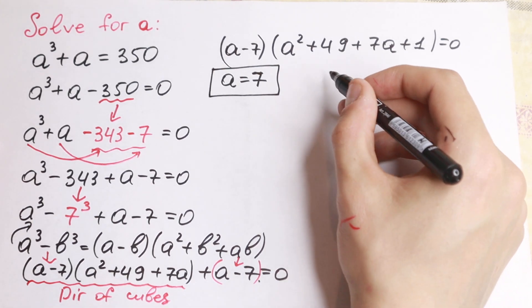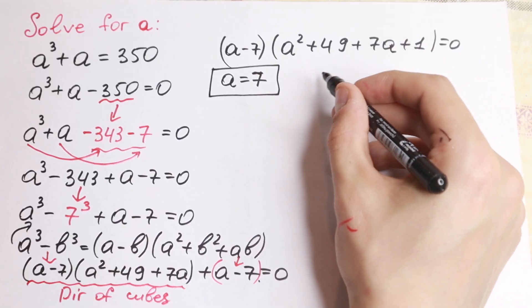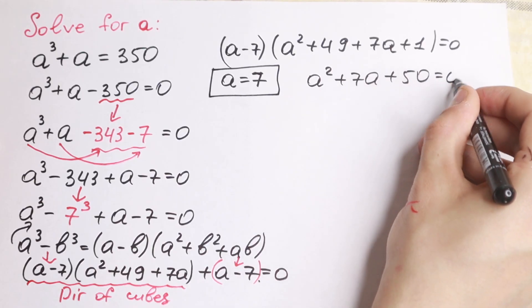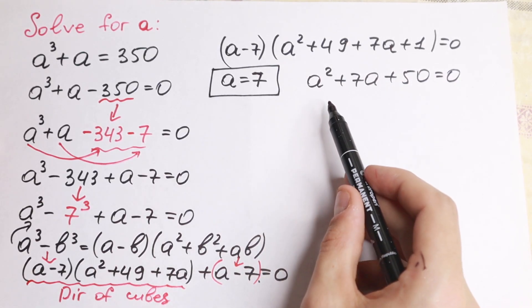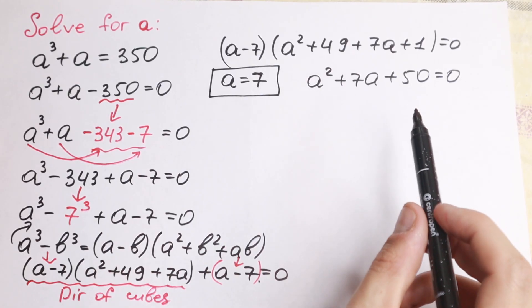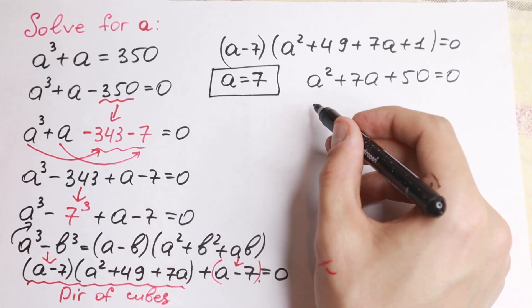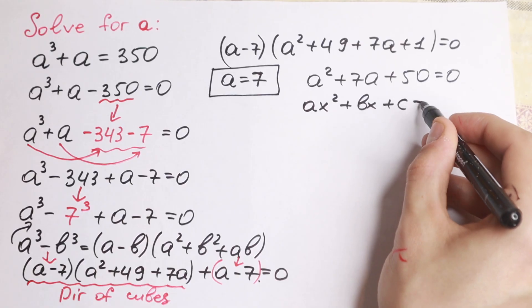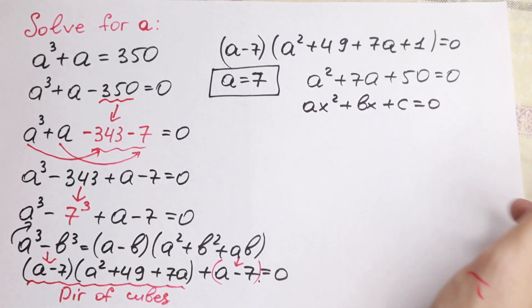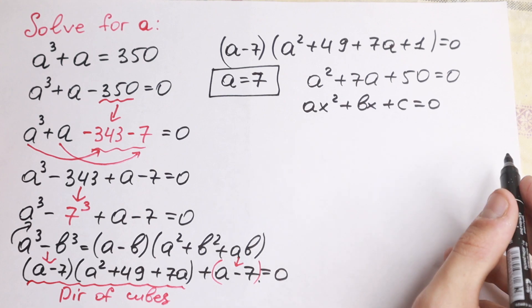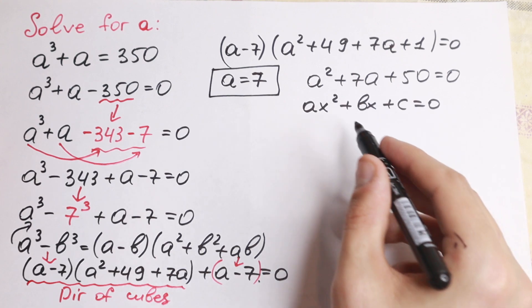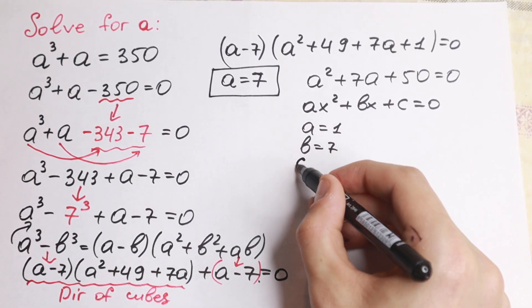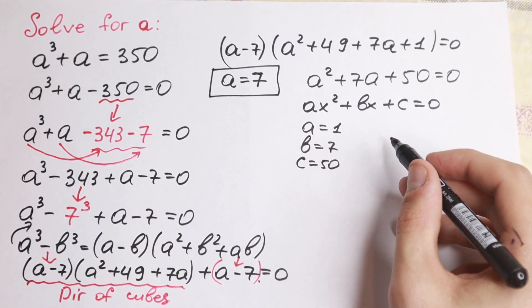Moreover, we can easily find the second root. 49 plus 1 will be 50, so we have a square plus 7a plus 50 equal to 0. This is a quadratic equation of the form ax square plus bx plus c equal to 0. Using the discriminant, we can find a equal to 1, b equal to 7, and c equal to 50, and plug all of these into the formula.